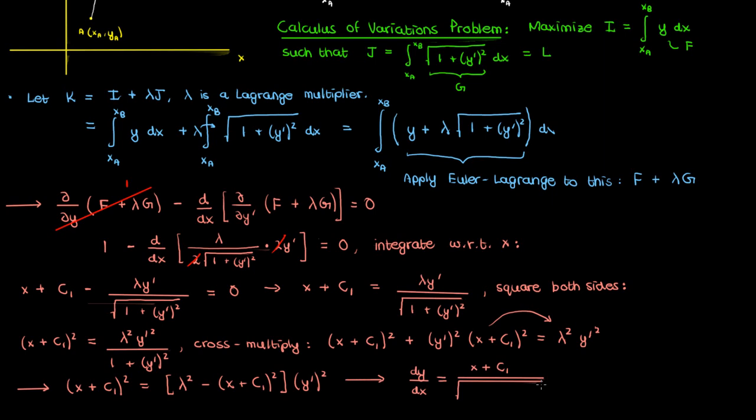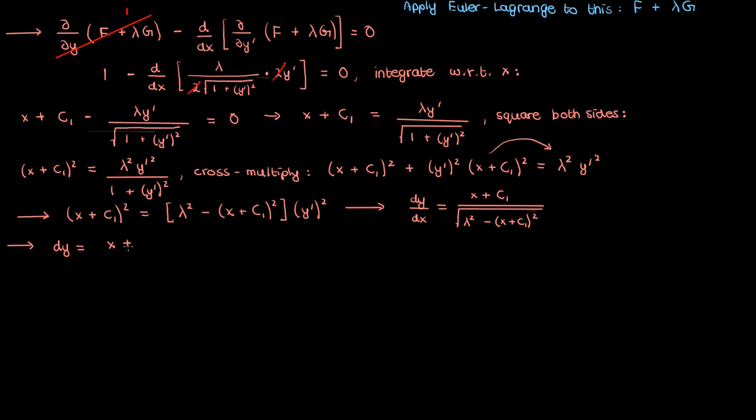Now what we'll do is we'll separate the variables we'll take the dx to the other side and then integrate both sides to get y as a function of x. The integral with respect to x is a bit involved and requires us to use multiple substitutions. You could of course just use an integration table but I'm going to be a Chad and do the integration by hand.